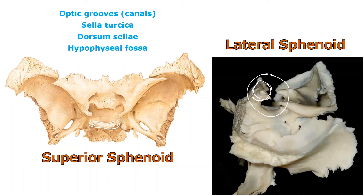Another word for the pituitary gland is the hypophysis. You may see the adjectival form — hypophysial. We know a fossa is an indentation or depression. So right here I'm drawing the smooth bottom — that's the hypophysial fossa. That's where the pituitary gland will sit — that's the cowboy's butt sitting in the saddle. If the dorsum sellae is in white, the hypophysial fossa is in red.